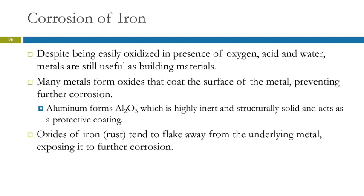Metals corrode in the presence of oxygen, acid, and water, but they're still very useful as building materials. Many metals form oxides when they're oxidized, and that forms on the surface where the oxygen and water was. But if the oxide that forms is tough — structurally solid and unreactive — then it acts as a protective coating to prevent further oxidation. That's something aluminum does. Aluminum forms Al2O3, which is very inert and structurally solid, so it protects the aluminum. You get a little corrosion on the surface and then it seals itself in.